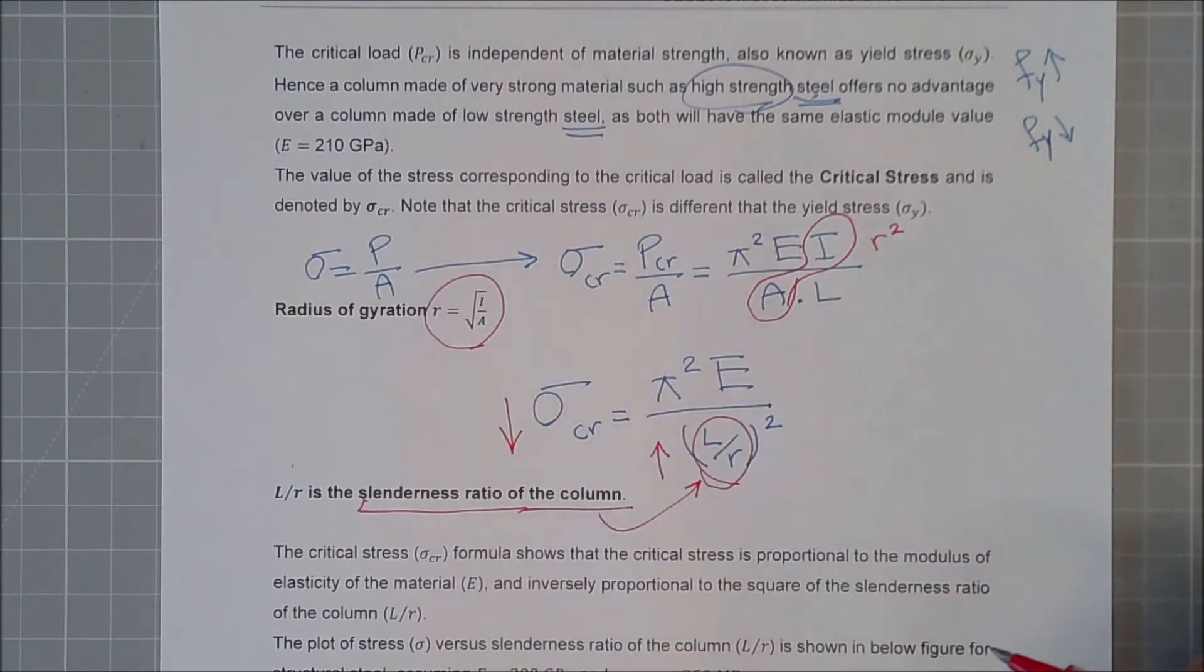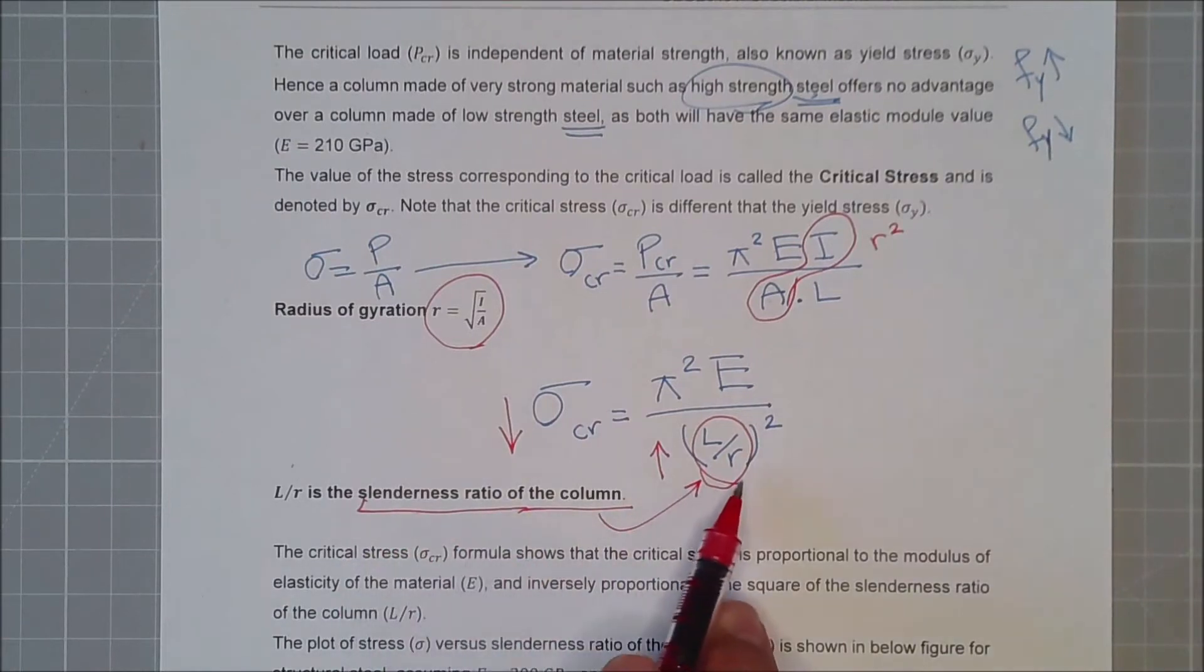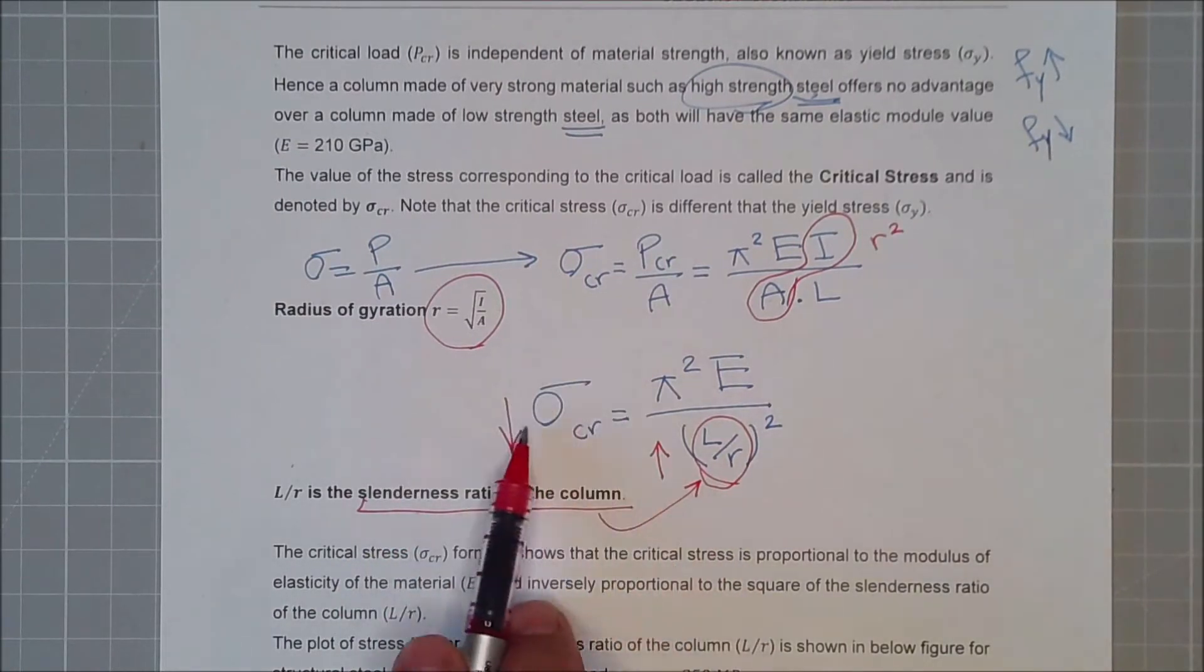Which will be problematic. So you want always your slenderness ratio to be very small. So the critical stress that your column will not reach to buckling will be much higher.